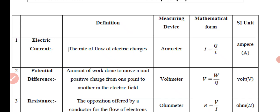Electric current means the rate of flow of electric charge is called electric current. The device used to measure electric current is the ammeter. Electric current formula: I = Q/t. Its SI unit is ampere.